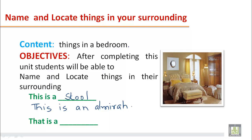Now, suppose some objects are far away. For example, if the lamp is in the corner, far away, we use 'that'. So we say: that is a lamp. So for a near object we use 'this', and for a far object we use 'that'.